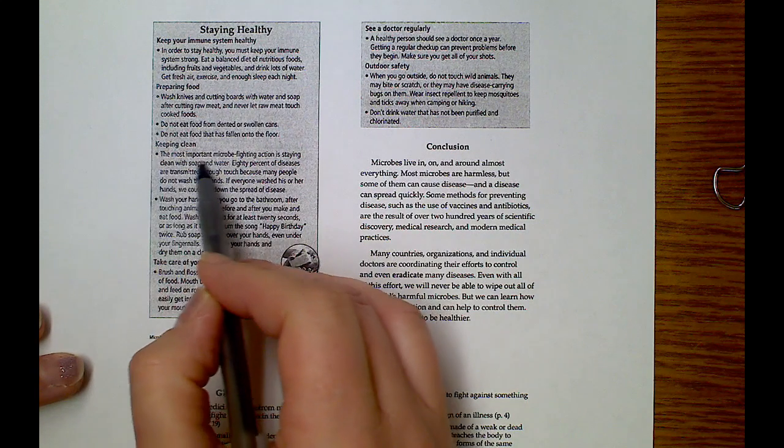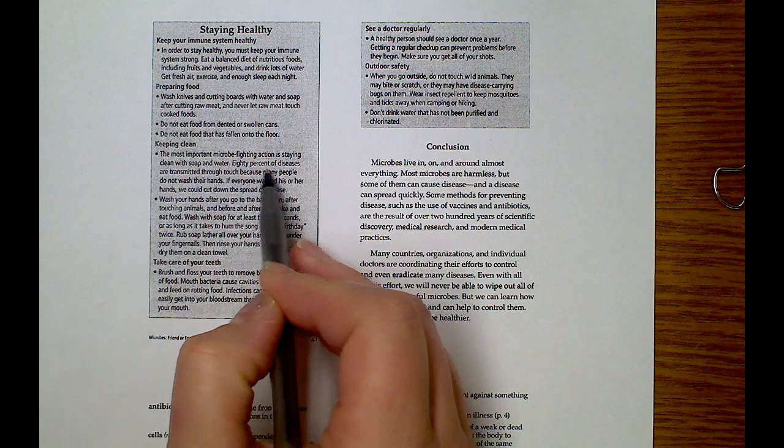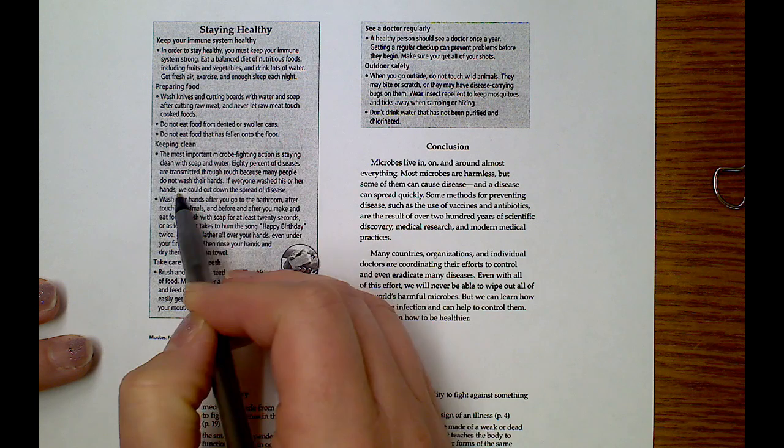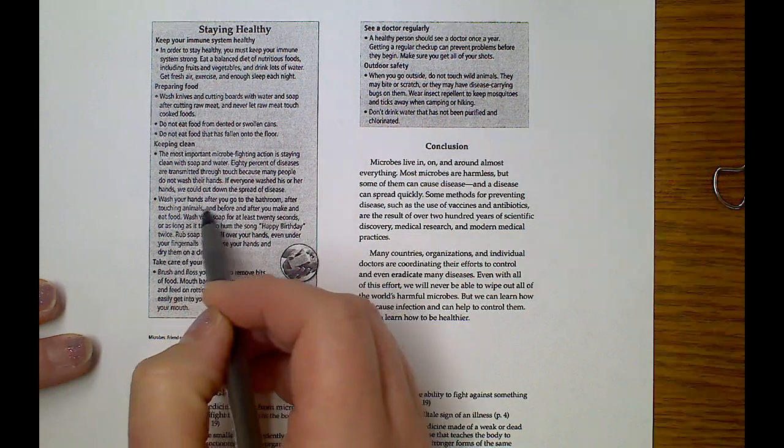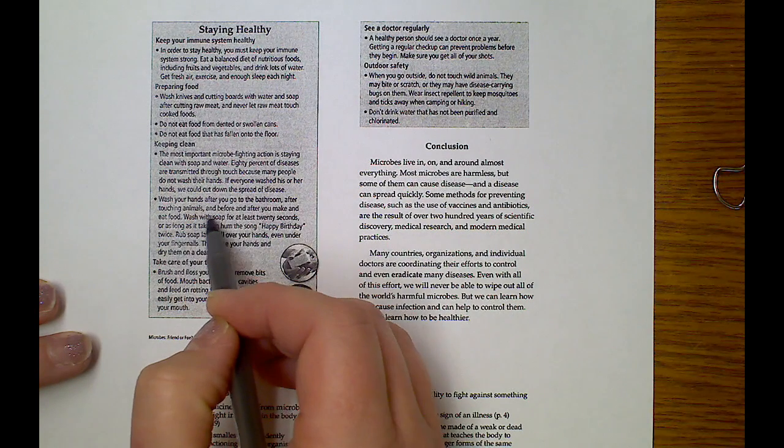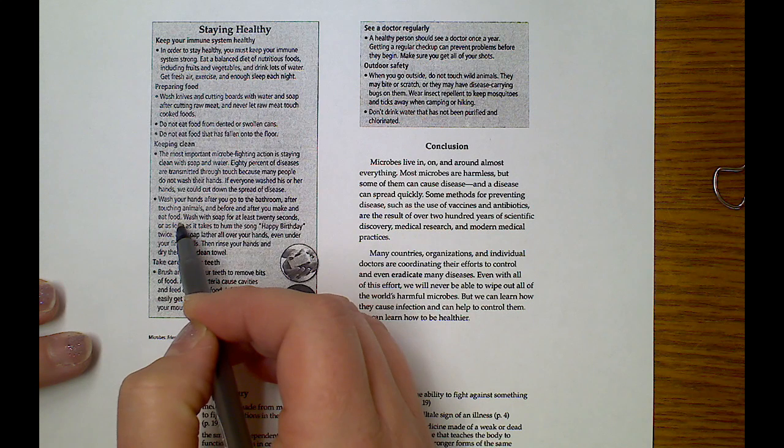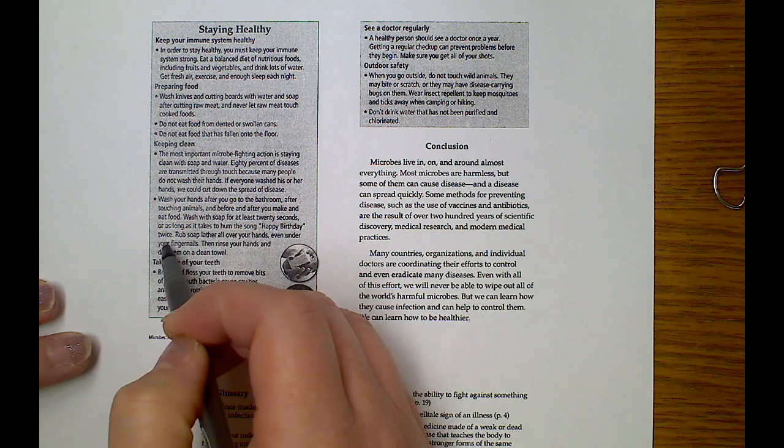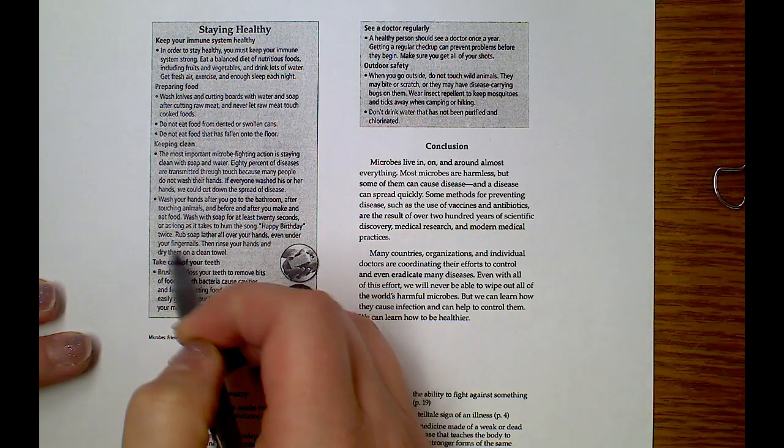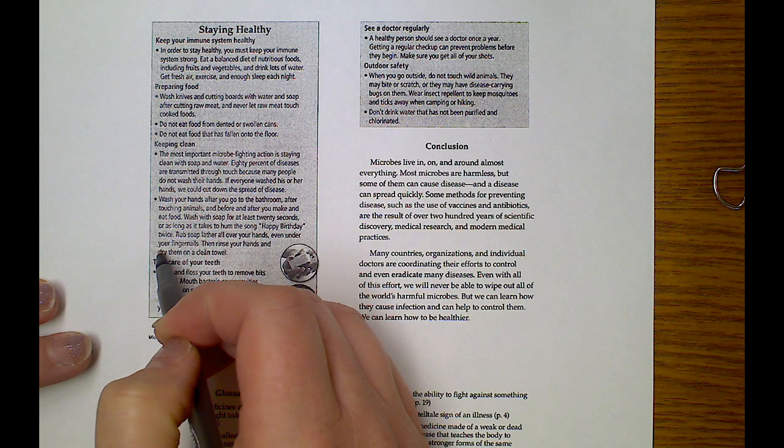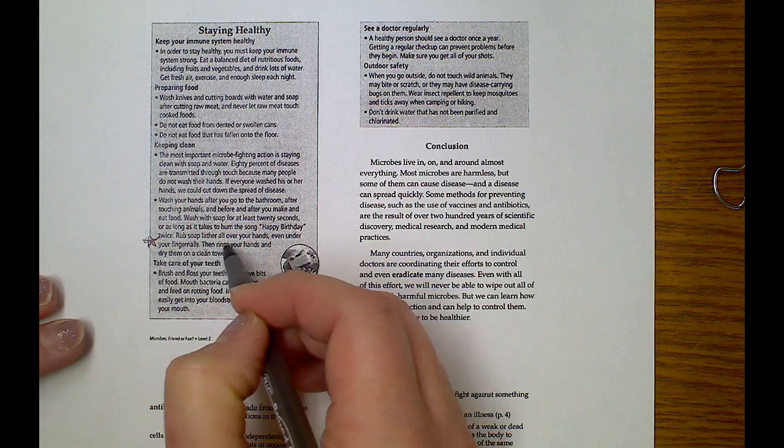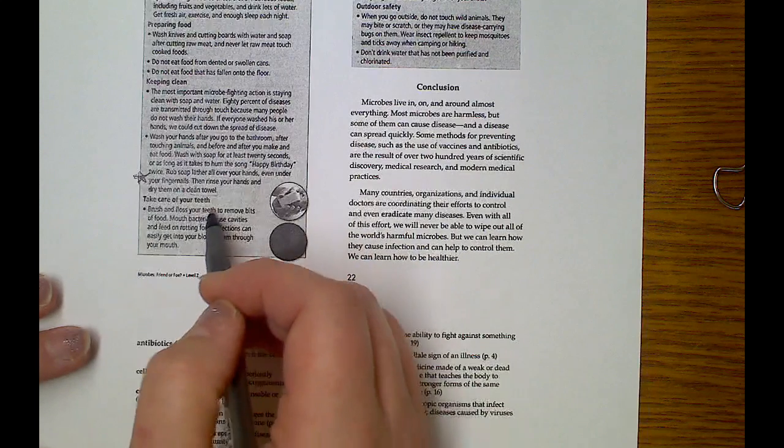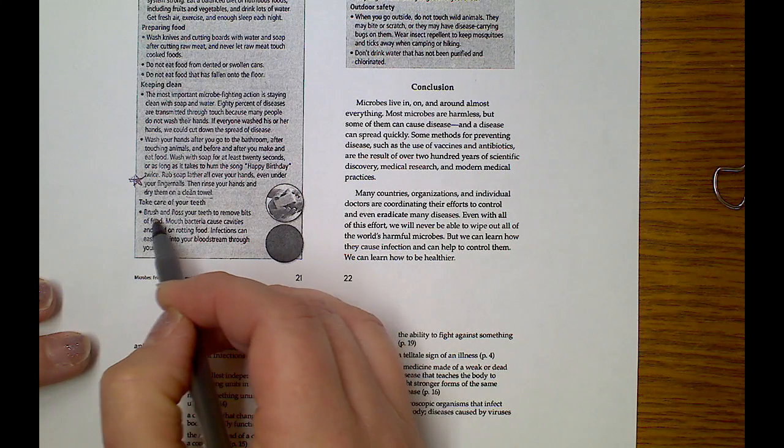Keeping Clean. The most important micro-fighting action is staying clean with soap and water. 80% of diseases are transmitted through touch because many people do not wash their hands. If everyone washed his or her hands, we would cut down the spread of disease. Wash your hands after you go to the bathroom, after touching animals, and before or after you make and eat food. Wash with soap for at least 20 seconds or as long as it takes to hum the song 'Happy Birthday' twice. Rub soap lather all over your hands, even under your fingernails, and then rinse your hands and dry them on a clean towel.